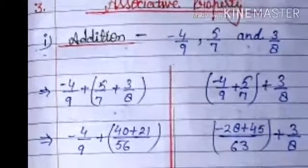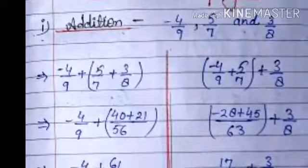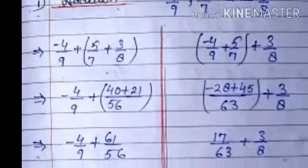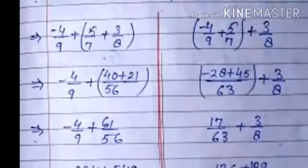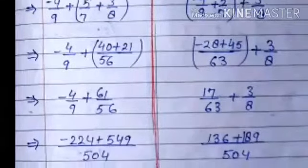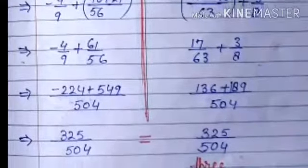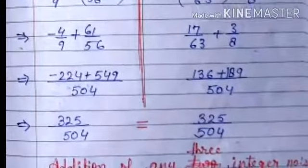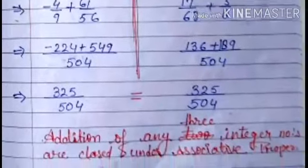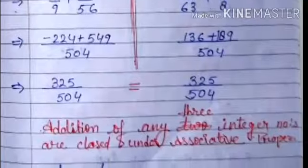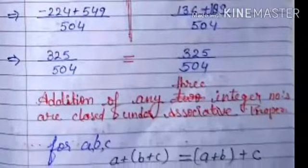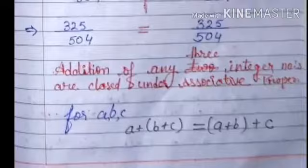Next we will check these operations for associative property. First, for addition, we have three rational numbers: minus four upon nine, five upon seven, and three upon eight. We add the first rational number to the sum of the last two on one side, and the sum of the first two to the last rational number on the other side. Both solutions give 325 upon 504. So addition of any three rational numbers is closed under associative property — that is, a plus (b plus c) equals (a plus b) plus c.